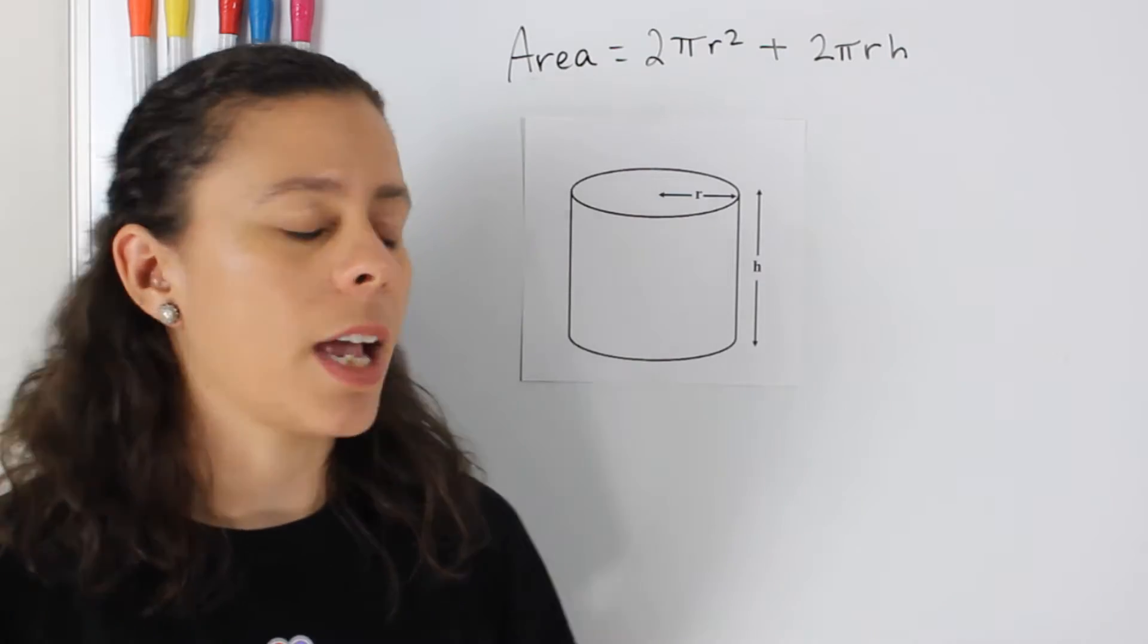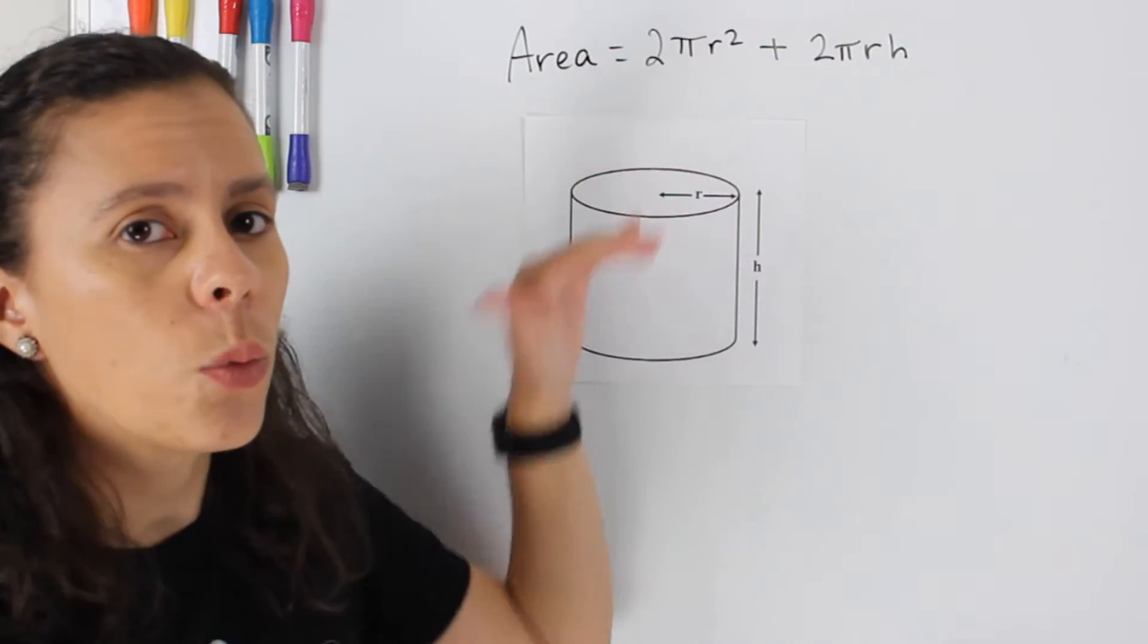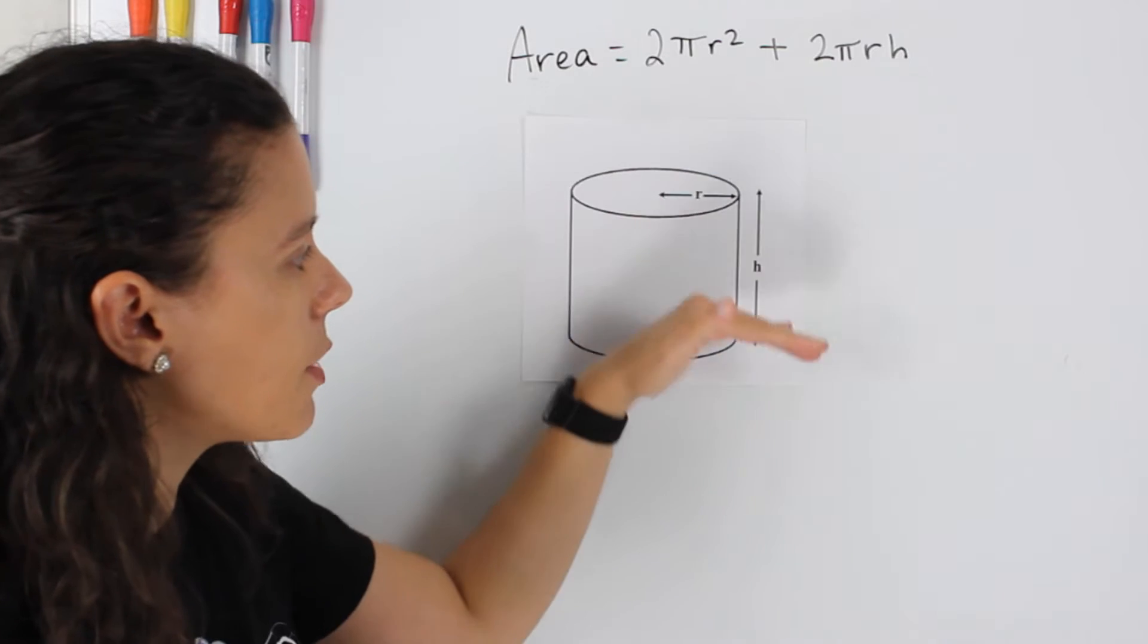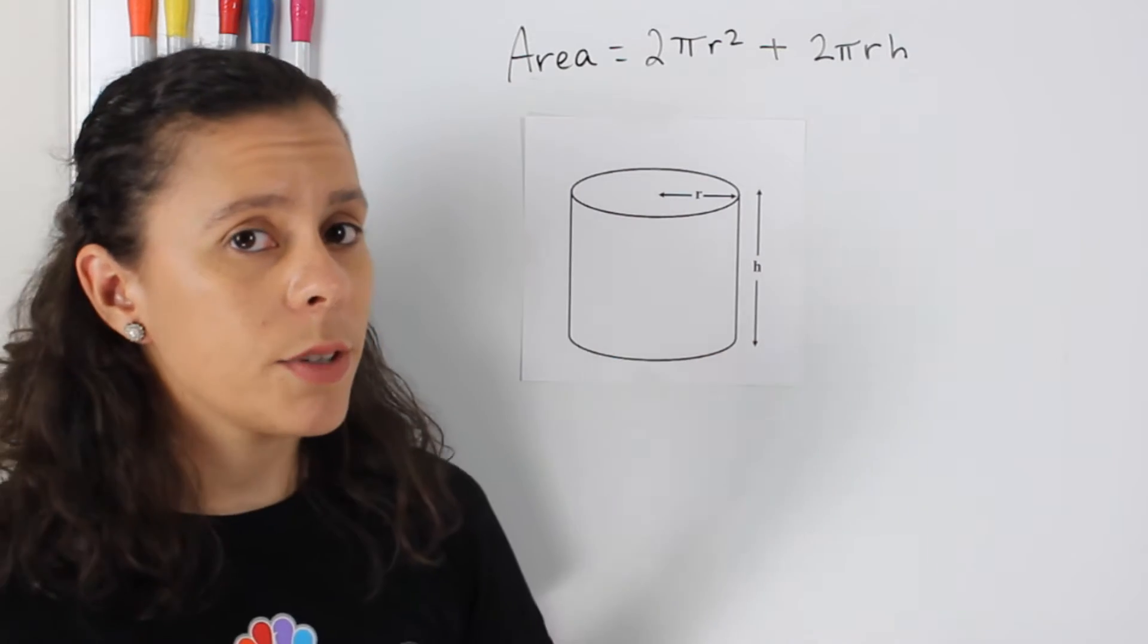We're going to do the exact same thing. We're going to take apart the circles, which we have two of them. We have a circle at the top, we have a circle at the bottom on every cylinder.